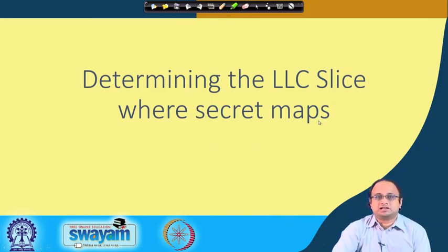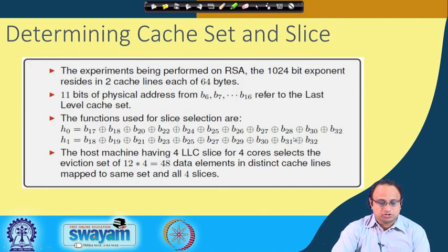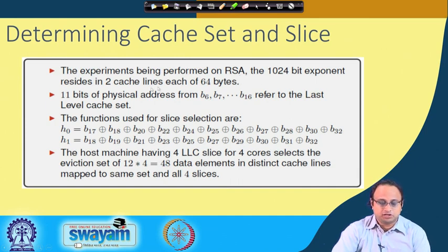Where we stopped in the last class, we were basically determining the LLC slice where the secret maps. We saw how Prime and Probe can be utilized in this context. The experimental setup we are considering here is essentially an RSA implementation with a 1024-bit exponent, which basically can reside in 2 cache lines, each of 64 bytes.